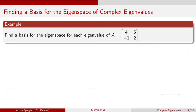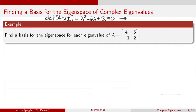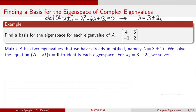Welcome folks. Let's continue our work with the following matrix A, a two by two matrix where the first column is four, minus one and the second column is five, two. We want to find the eigenvalues and eigenvectors for this matrix. We've considered the characteristic equation and its complex roots, finding that lambda is equal to three plus or minus two i.